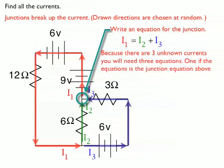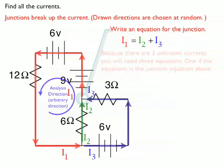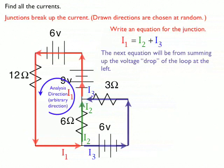For other equations, we're going to use the loop theorem, or loop rule. So I'm choosing my analysis direction as going counterclockwise in my left-hand loop. Now what I need to do is find the voltage drops and the voltages added and subtracted from the batteries.